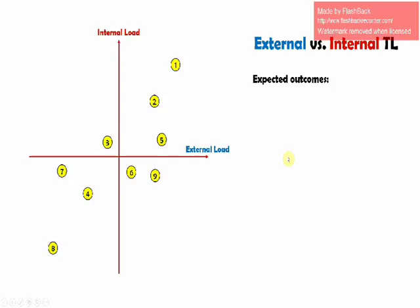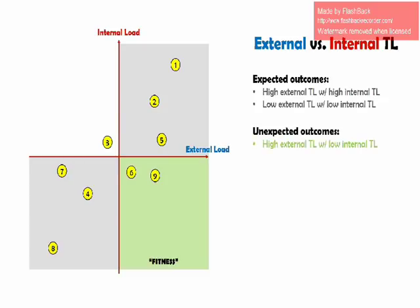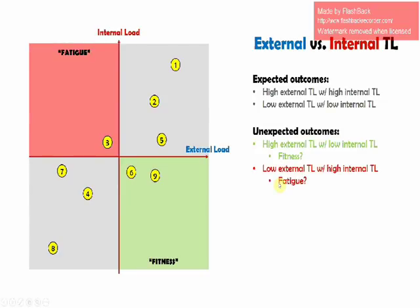What we would do here is break this internal-to-external relationship up into four quadrants. We've got the two expected quadrants: a high external load with a high internal load, or a low external load with a low internal load — that's what we would expect to see. But then we've got unexpected outcomes: a high external load with a low internal training load, which could be indicative of fitness; or a low external load with a high internal training load, which could be indicative of fatigue.